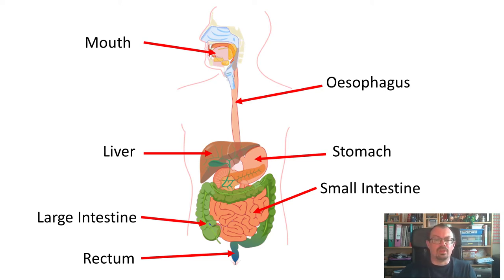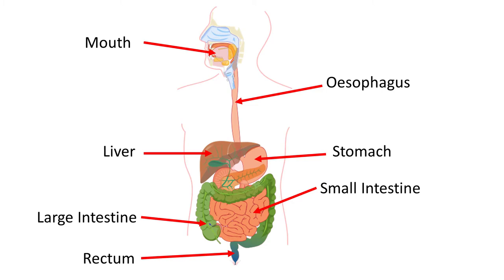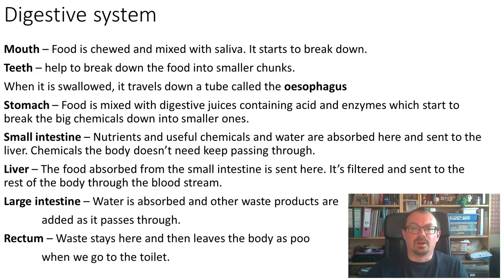Try and remember all the names of these parts of the digestive system — on the next slide we'll see if you can remember them. So can you remember the names of each of these parts of the digestive system? Can you write some down? Pause the video, have a go, and play it again when you're ready to move on. So these are the jobs of the different parts of the digestive system — the different organs in the digestive system.